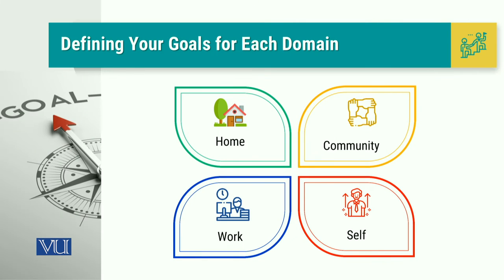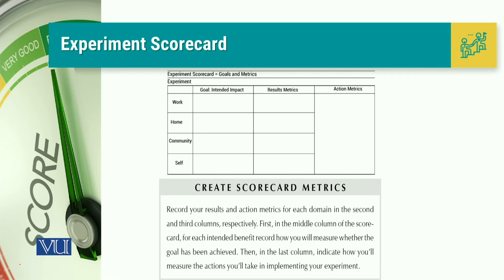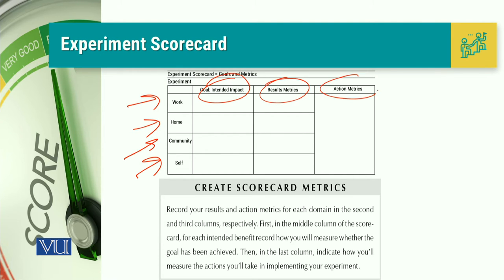When we talk about these 4 perspectives, remember that we have to be cautious about our concerns related to these 4 domains, and we are going to attempt an exercise taking the shape of a scorecard. When we talk about the scorecard, there are 4 perspectives: work, home, community, and self. The columns we have are related to intended impact, results matrices, and action matrices.